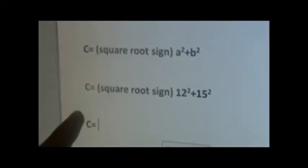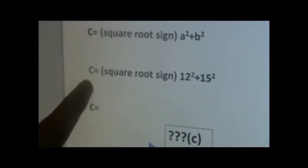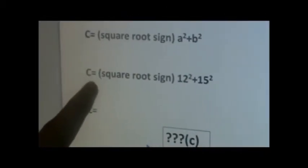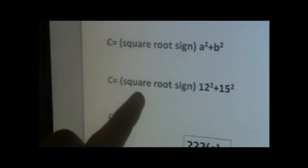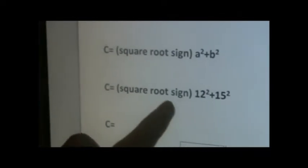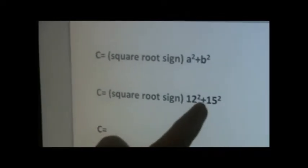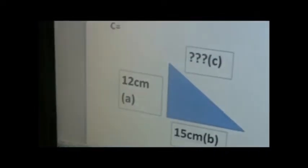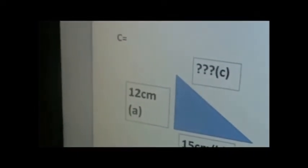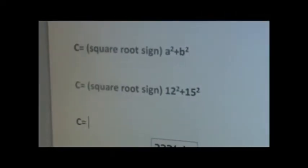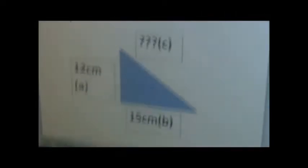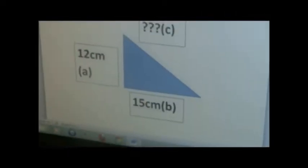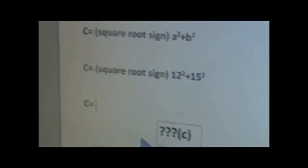The second step is substitution. Under the square root sign, in this case, our A is going to be 12 centimeters and our B is going to be 15 centimeters.